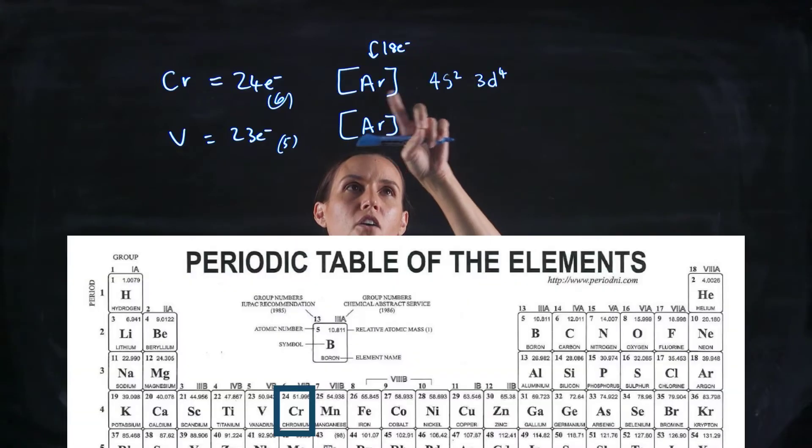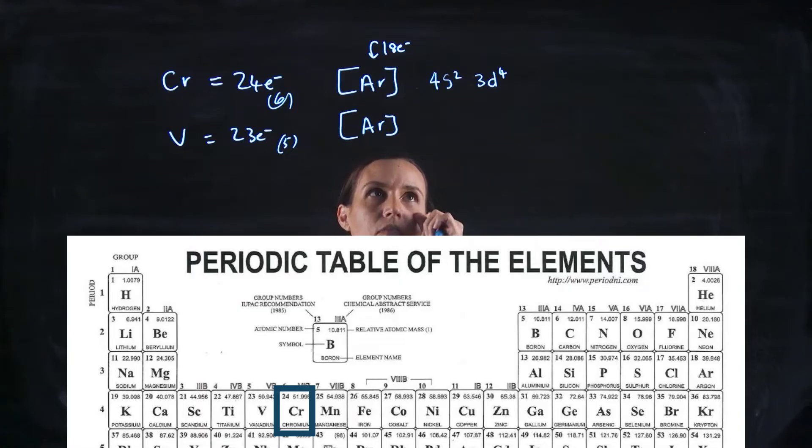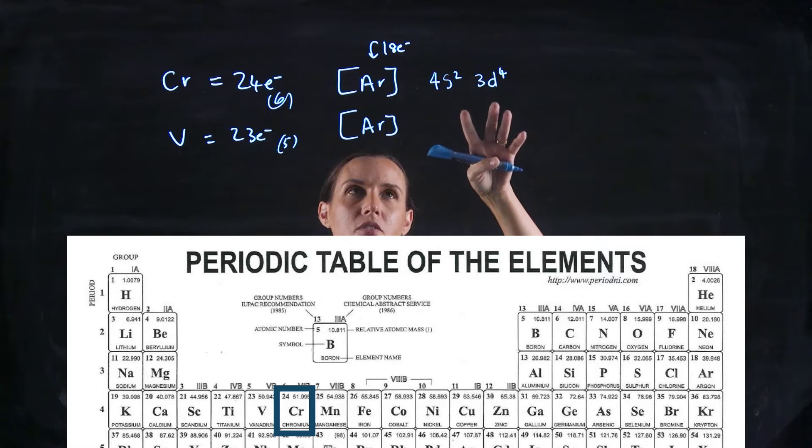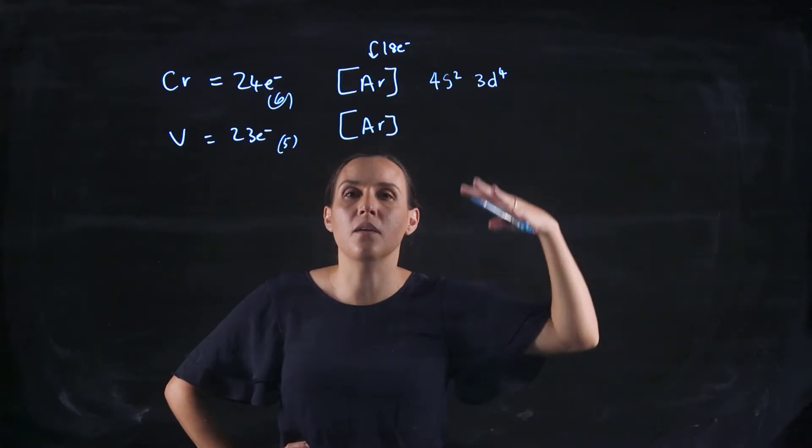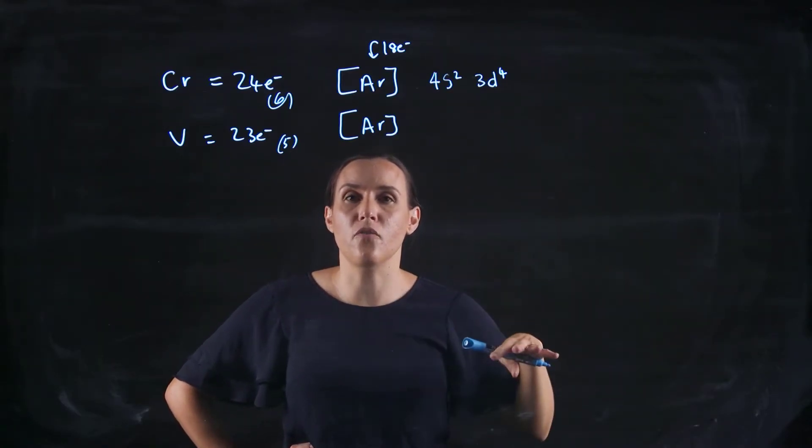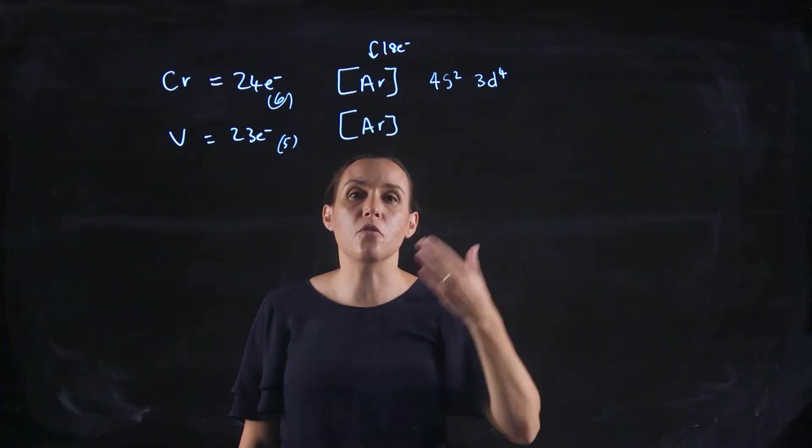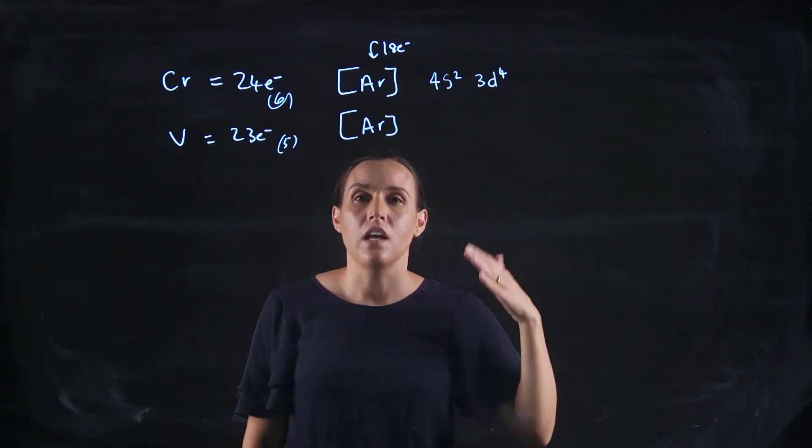So I'd have argon, 4s2, 3d4. So 4 plus 2 giving me my 6 electrons. Now, this is how you'd write it following the rules. But what we know about the d orbitals is when they're half filled, they drop in energy. And when they're completely filled, they drop further.